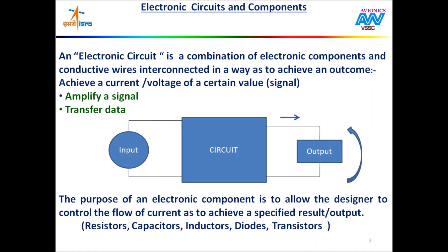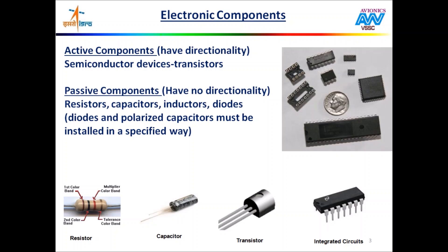Before understanding about avionics, let us familiarize with basic electronics. An electronic circuit is a combination of electronic components and conductive wires interconnected in a way to achieve an outcome — generally to obtain a certain value of voltage or current. We can achieve any required function by designing an electronic circuit. Electronic items we use in day-to-day life like TV, mobile phone, fridge, etc. are few examples. Electronic components can be classified into two: active components and passive components.